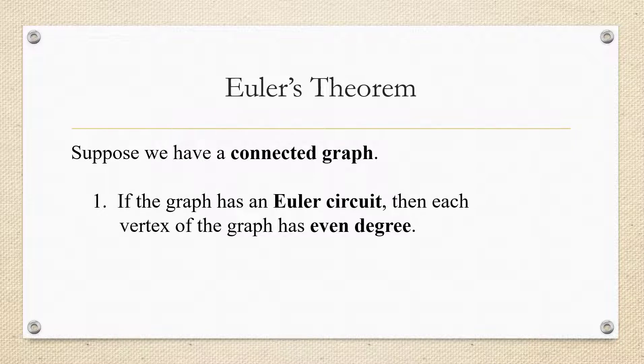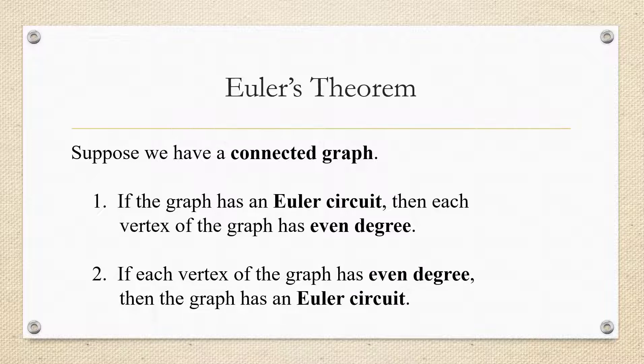He said that if you have any connected graph, if the graph has an Euler circuit, then each vertex of the graph has to have even degree. Remember, degree just refers to the number of edges that are coming in towards and touching a particular vertex. So even degree would mean it has two, four, six, eight, or so on edges touching each vertex. And he also said that in fact, if you find a graph that has even degree on each vertex, then the graph has to have an Euler circuit.